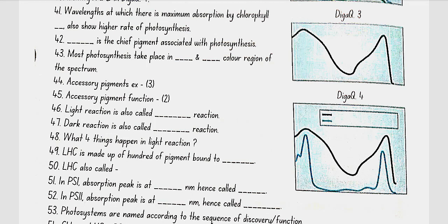Chlorophyll A is the chief pigment associated with photosynthesis. Most photosynthesis takes place in the blue and red colour regions of the spectrum. Accessory pigments include chlorophyll B, xanthophyll, and carotenoids. Their functions are to enable a wider range of wavelengths of incoming light to be utilised, and to protect chlorophyll A from photo-oxidation.